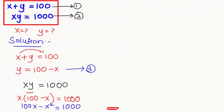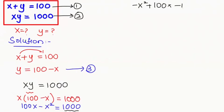In the next step, I'm going to take this 1000 to the left hand side and rearrange according to the power. So we get minus x squared plus 100x minus 1000 is equal to 0. Now here I want to remove this negative sign.